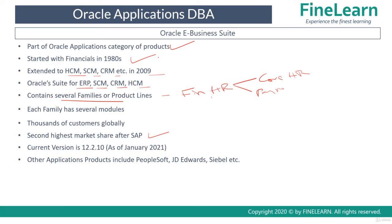Oracle E-Business Suite is part of a category called Oracle Applications. If someone asks you the difference between Oracle Applications and Oracle E-Business Suite, remember that Oracle Applications is a category of products in Oracle Corporation. For example, in Oracle we have a category called Database — Oracle offers different types of databases such as Oracle Database, MySQL Database, Berkeley Database, etc. That is a category of products called Database. Similarly, Oracle has a category of products used for managing business, and that category is called Oracle Applications. Oracle E-Business Suite is one of the products that falls under this category.